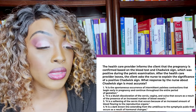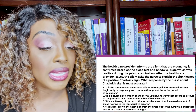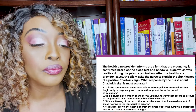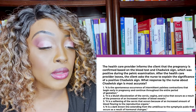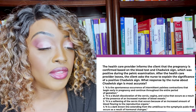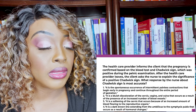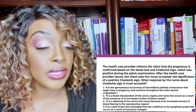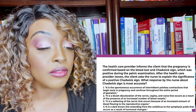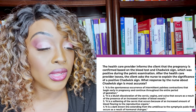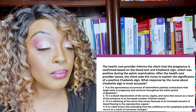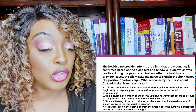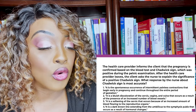One: it is a spontaneous occurrence of intermittent painless contractions that begin early in pregnancy and continue throughout the entire period of gestation. Two: it is a bluish discoloration of the cervix, vagina, and vulva that occurs as a result of an increased number of blood vessels. Three: it's a softening of the cervix that occurs because of increased blood flow to the reproductive organs. Four: it's a dark brown line extending from the umbilicus to the symphysis pubis that occurs as a result of hormonal changes.